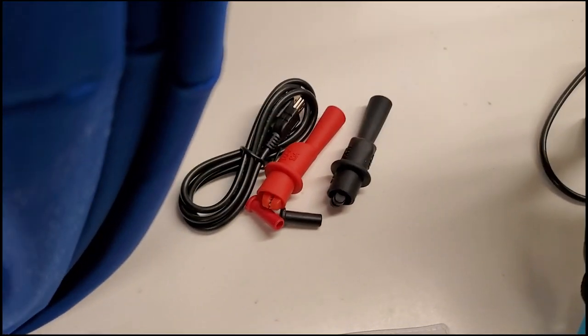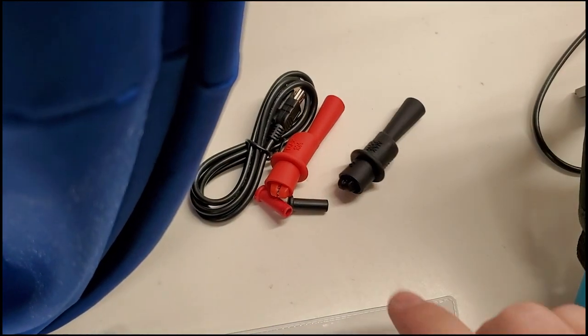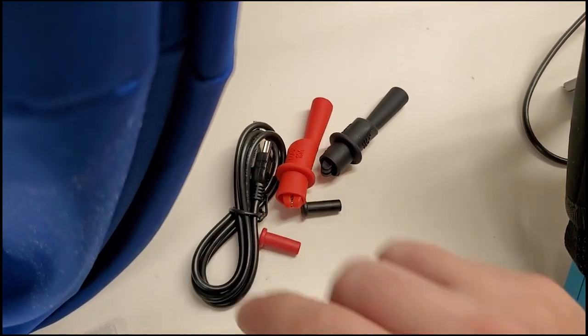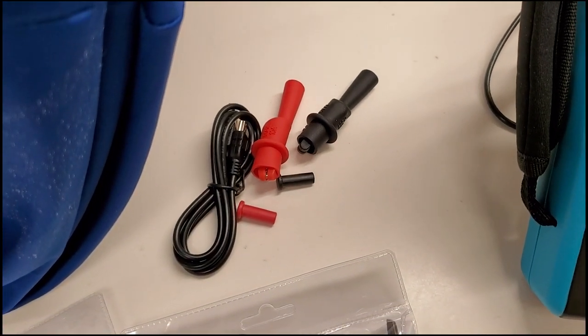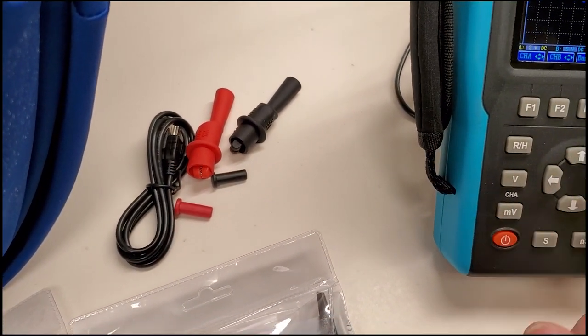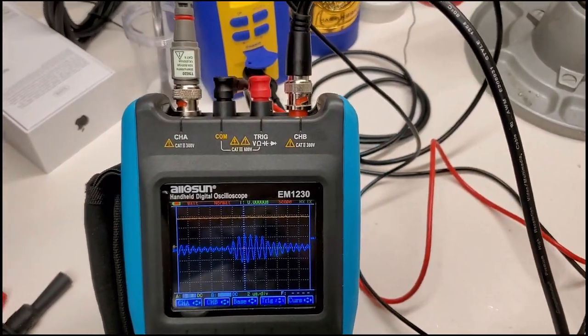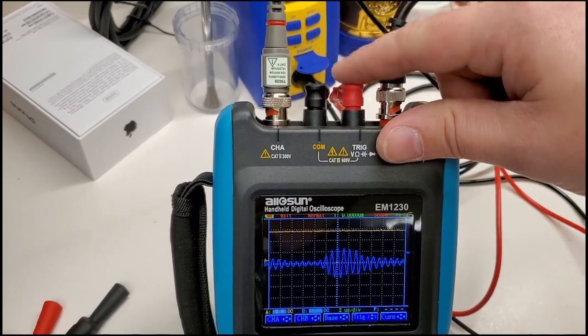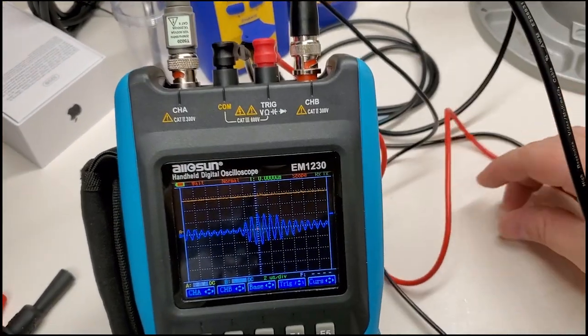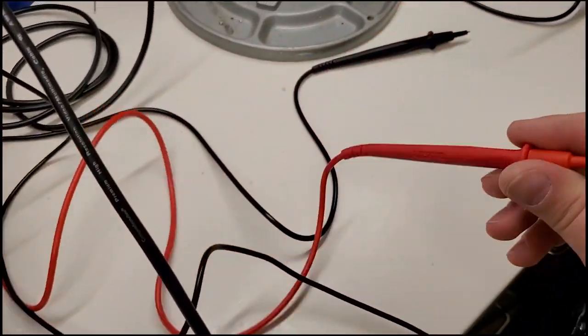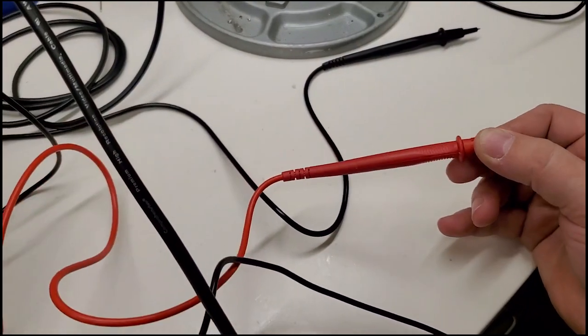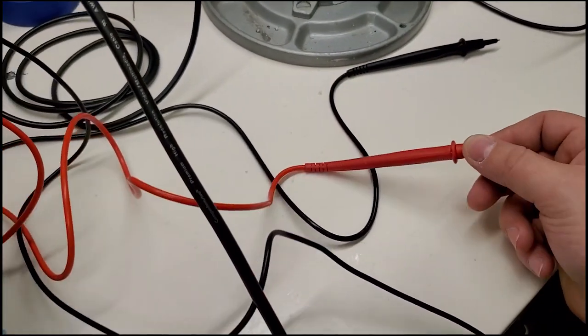Also in the case are two gator clips, USB cords so that you can either charge the meter or you can connect it to a PC and get your recordings off it. It comes with a set of PVC insulated leads.